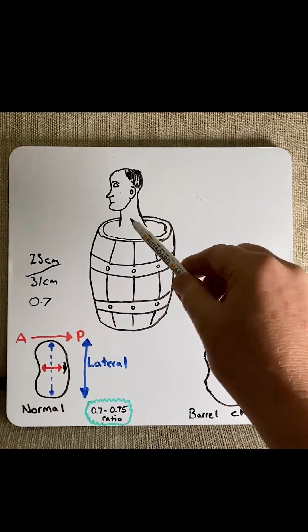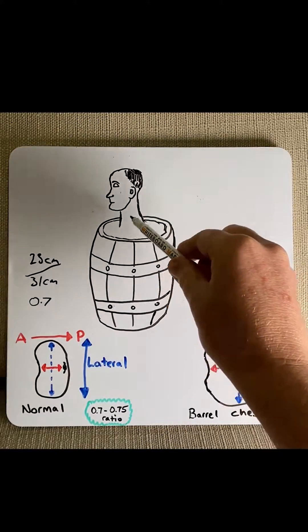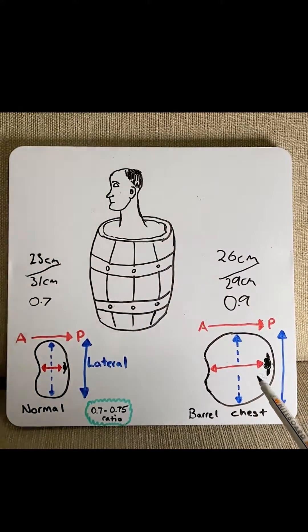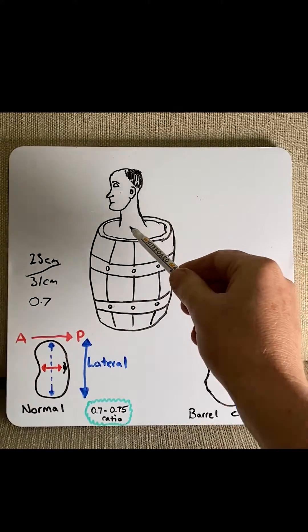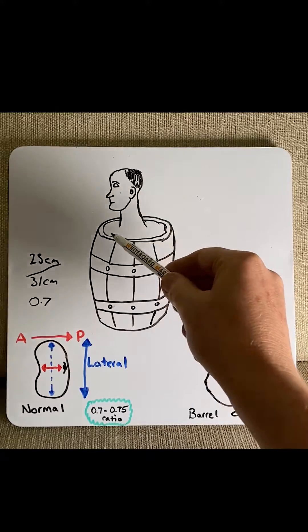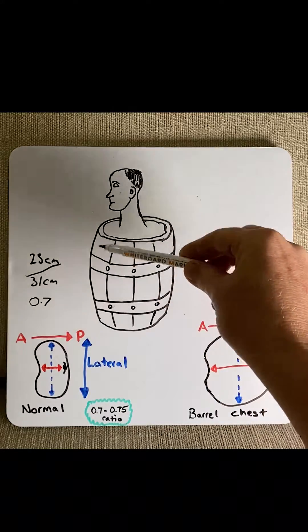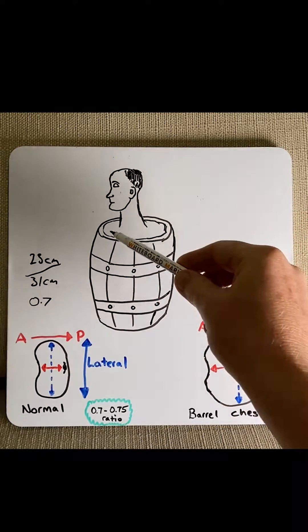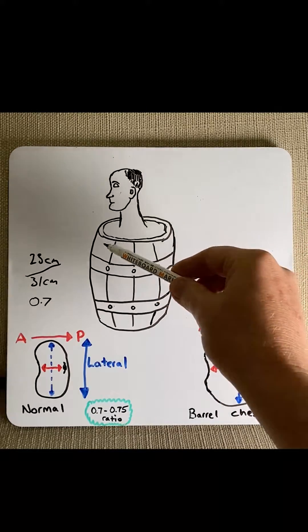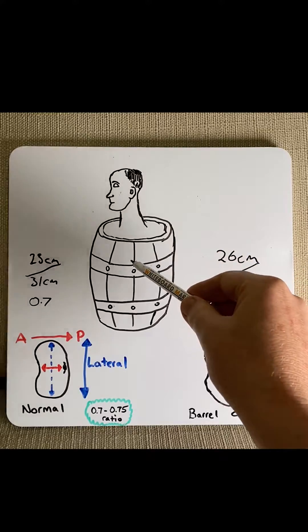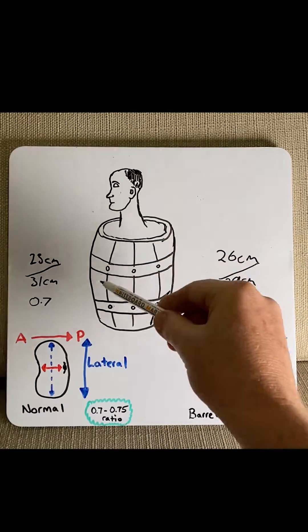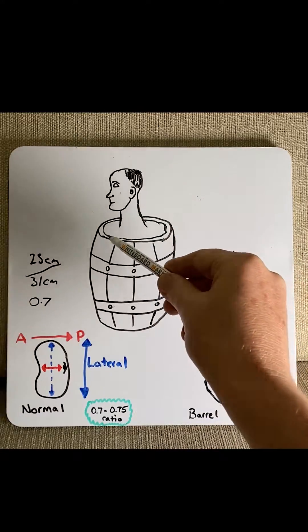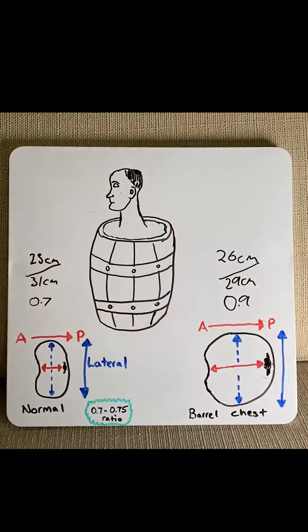Firstly, the accessory muscles in the neck that help with breathing, such as the scalenes or the sternocleidomastoid, cause a pulling up of the ribs, the clavicle, and the sternum. This, combined with hyperinflation of the lungs, gives a barrel chesting appearance.